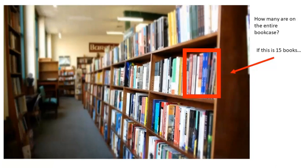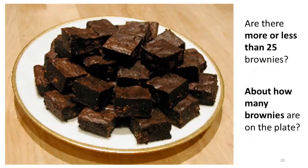Maybe this is a better example for first and second graders: 'Are there more or less than 25 brownies on the plate?' A student might say 'I can't see them all.' And the question pivots to: about how many brownies are on the plate — what would be a good estimate, how do you know? Students engage, think on their own, share ideas with a partner, and then the teacher positions them to lead the conversation.